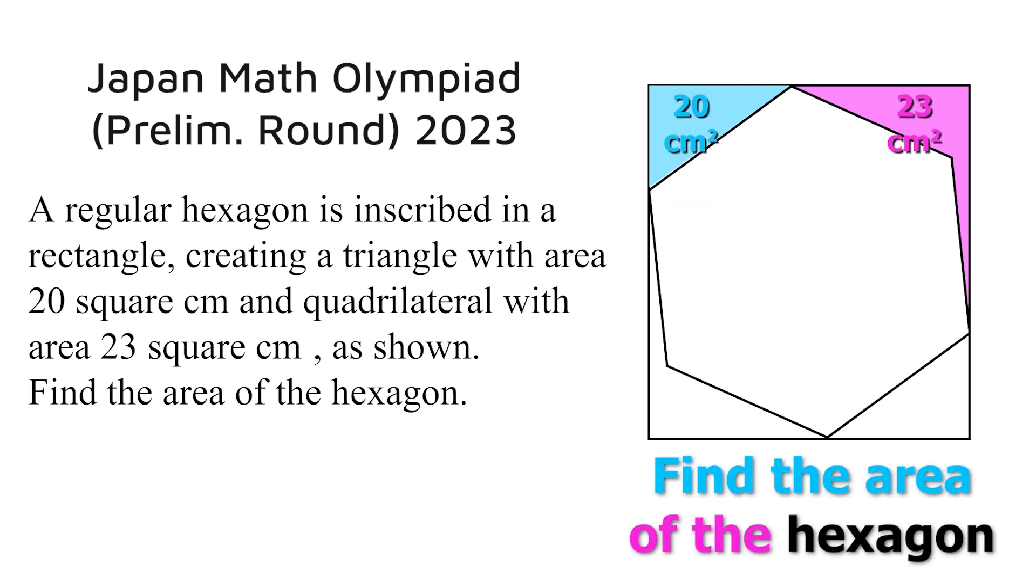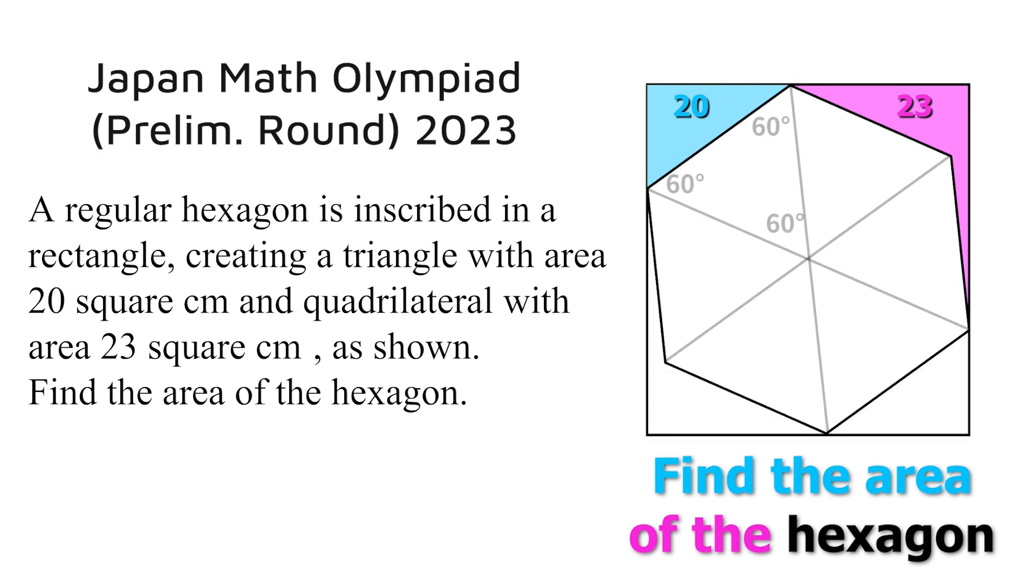It's a regular hexagon so it helps to start dissecting it into six equilateral triangles. It's often the case with geometry problems that we want to add a line or two in just the right place, and in this case the line we want to add is this one.